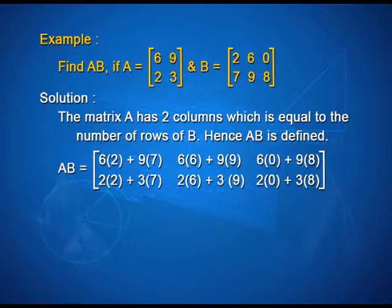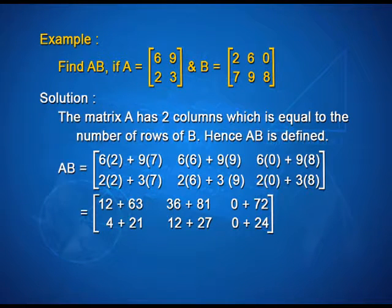Elements of the first row are multiplied with elements of the third column. Coming to the second row, we have 2 multiplied by 2 plus 3 into 7 as the first element. For the second element of the second row, 2 multiplied by 6 plus 3 multiplied by 9. The third element of the second row is obtained by 2 into 0 plus 3 into 8. On simplifying, we get 12 plus 63, 36 plus 81, 0 plus 72 as elements of the first row, and 4 plus 21, 12 plus 27, 0 plus 24 as elements of the second row.